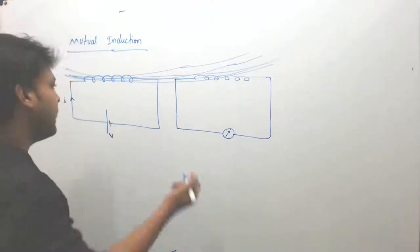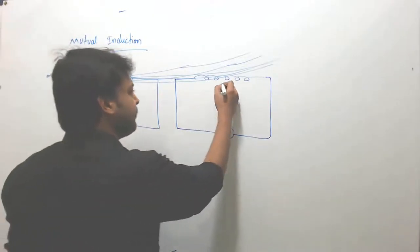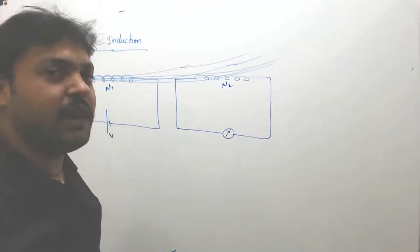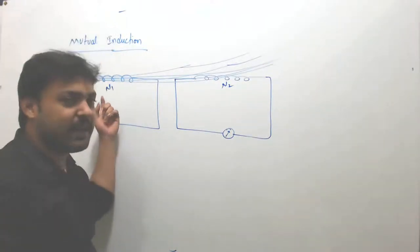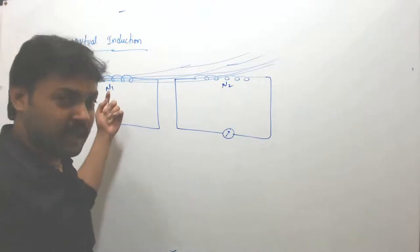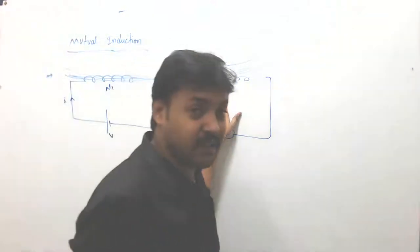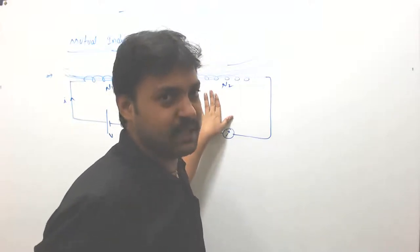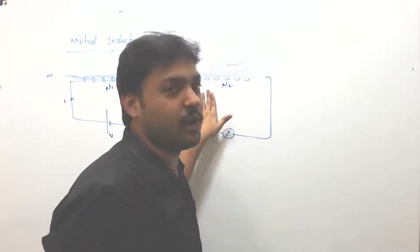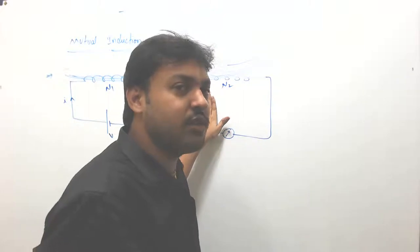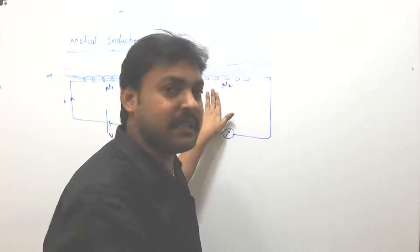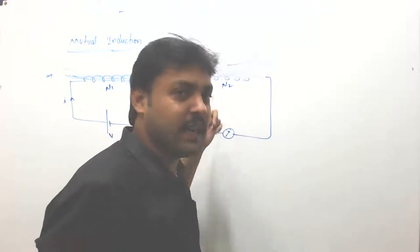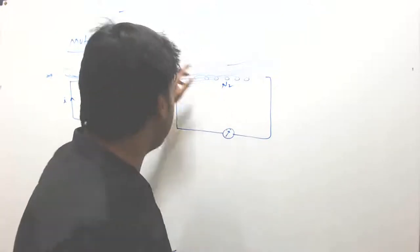So we have two coils — coil 1 and coil 2. A magnetic field is developed in the first coil. Due to that magnetic field, a change in the flux linkages happens in the second coil. Due to the change in flux, an induced EMF is developed in the second coil, and hence induced current is developed in the second coil.